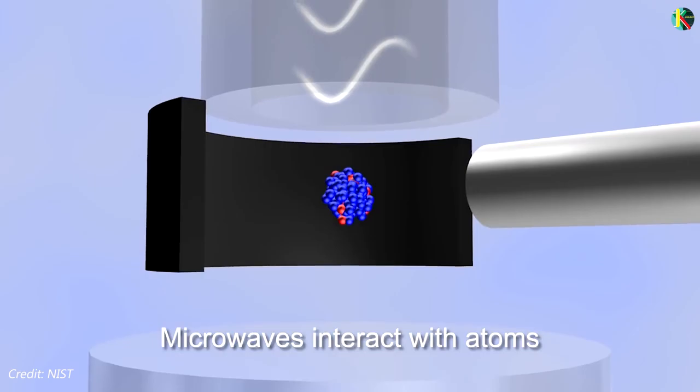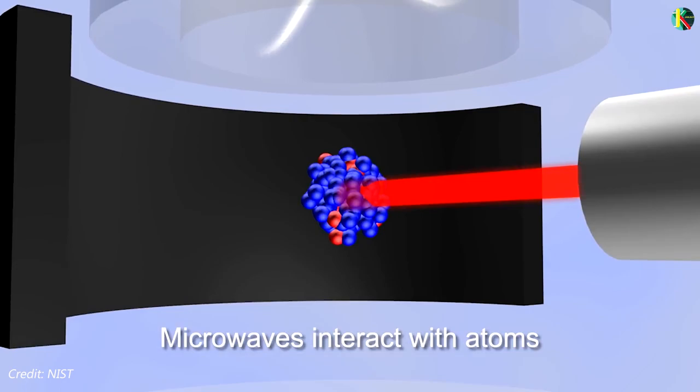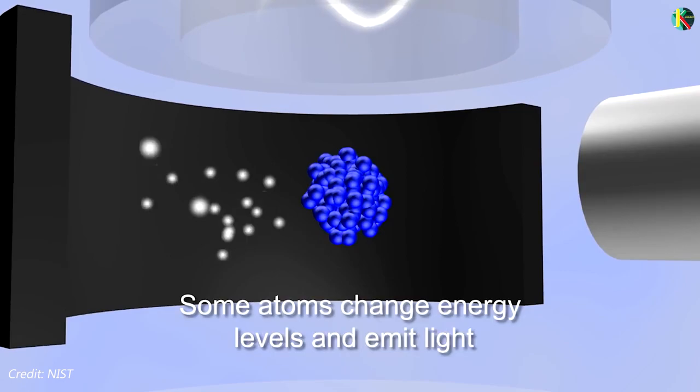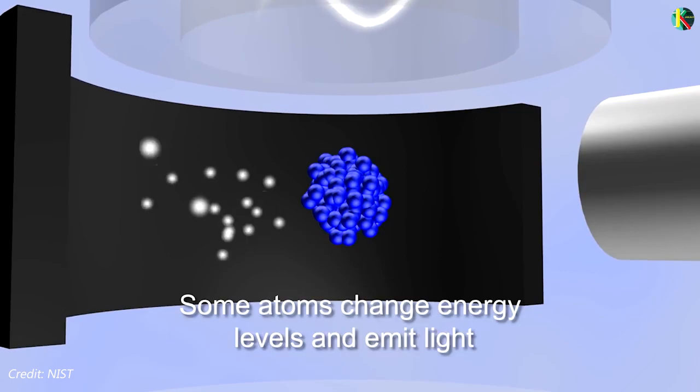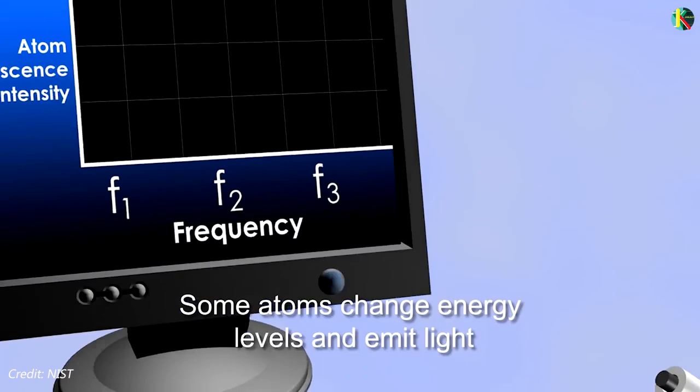Only those whose atomic states are altered by the microwave cavity are induced to emit light which is known as fluorescence. The photons emitted in fluorescence are measured by a detector and this procedure is repeated many times while the microwave energy in the cavity is tuned to different frequencies.